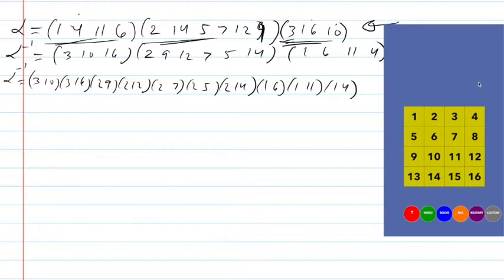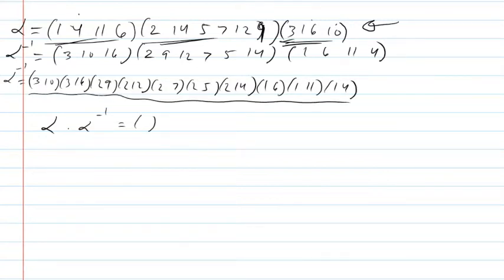Then I decomposed each of the cycles into pairs — swaps — and since alpha composed with alpha-inverse should be the identity, and I did this to what was already done, it solved the puzzle, and it did.